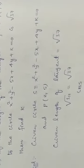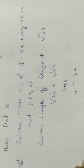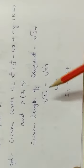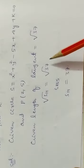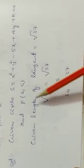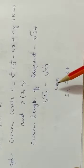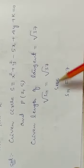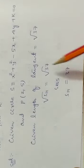Length of tangent formula is root S11. So, root S11 equal to root 37. To remove root, square both sides. So, S11 equal to 37.